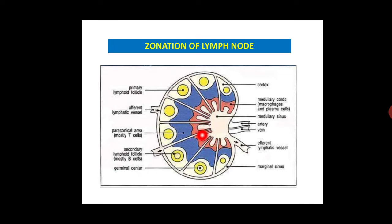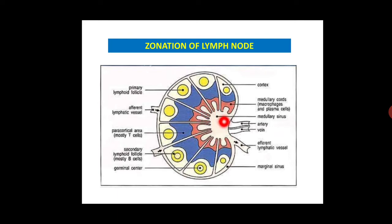These three layers have different microenvironments. In the cortex zone, B cells are primarily located in the follicle and germinal centers. Helper T cells are abundant in the paracortex region. Macrophages and dendritic cells are present in both cortex and paracortex regions. Antibody-producing plasma cells are abundant in the medullary region. The paracortex region is also called the thymus-dependent area, while the cortex region is called the thymus-independent area.